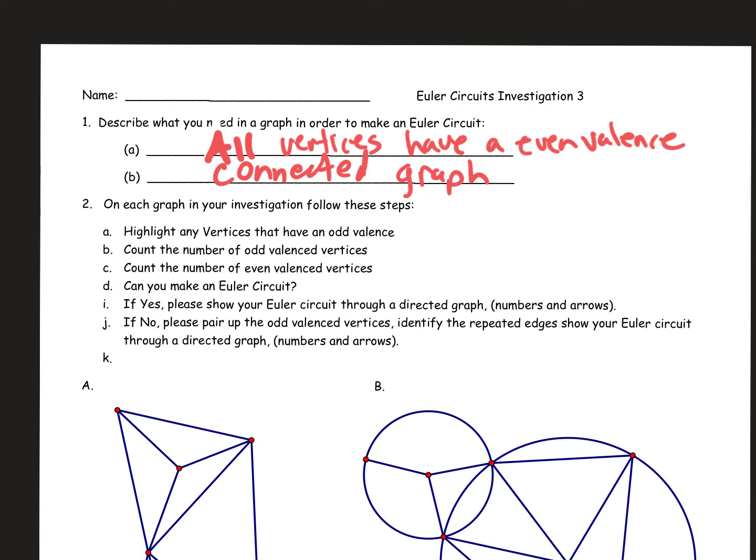A directed graph contains the numbers in the order of the edges that you're traveling around the graph plus they've got arrows indicating direction. You guys should all be at that point that you know how to do that. If not, then you've got to highlight the vertices that have an odd valence, pair up those odd valence vertices, and identify the connected edges you're going to reuse. Then find me that Euler circuit.